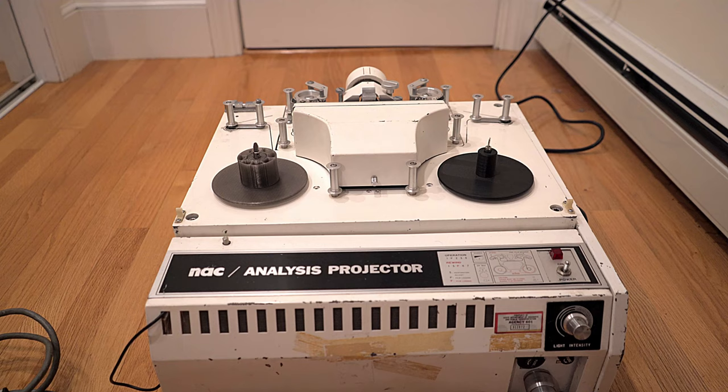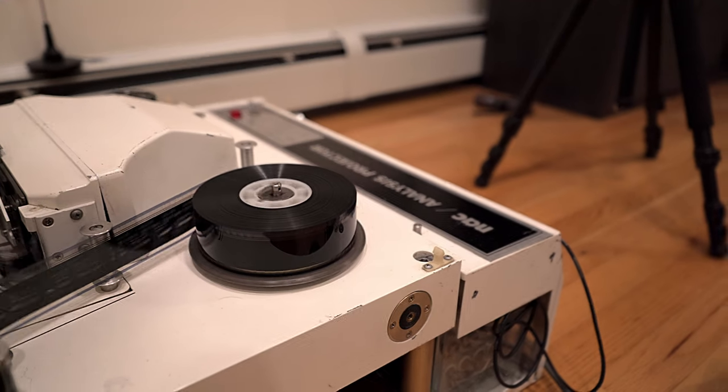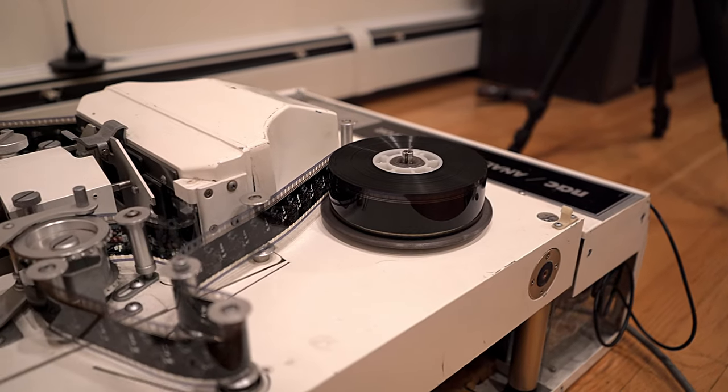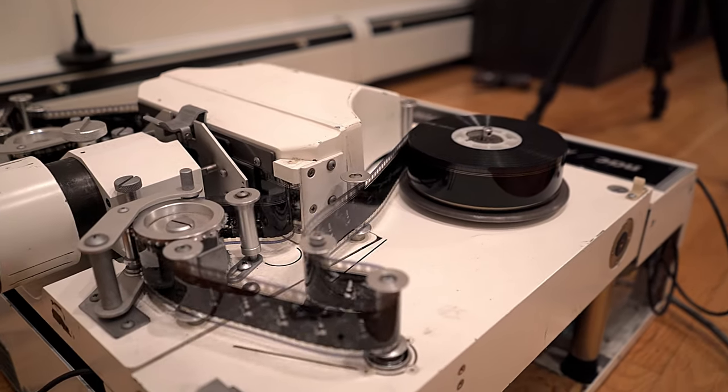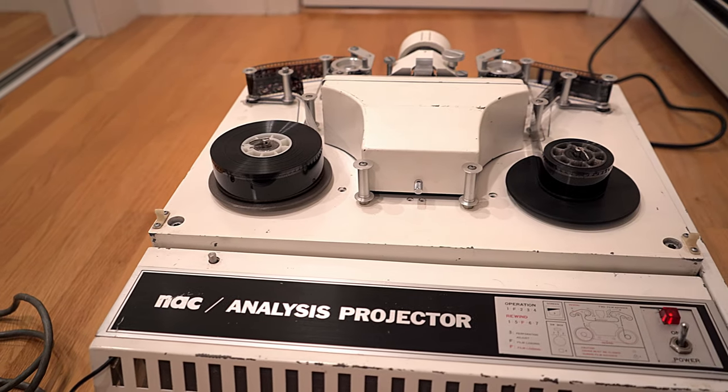Let's back up a bit. This projector, called an analysis projector, is designed to play 35 millimeter film at a variable rate of 24 frames per second all the way down to one frame per second, with the option to even manually advance it one frame at a time.